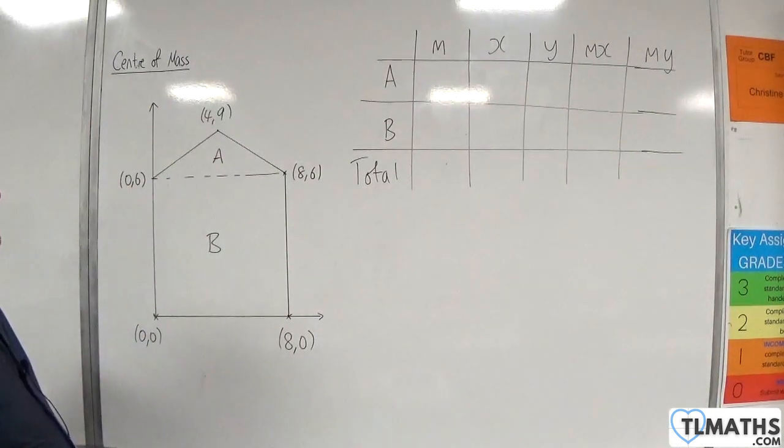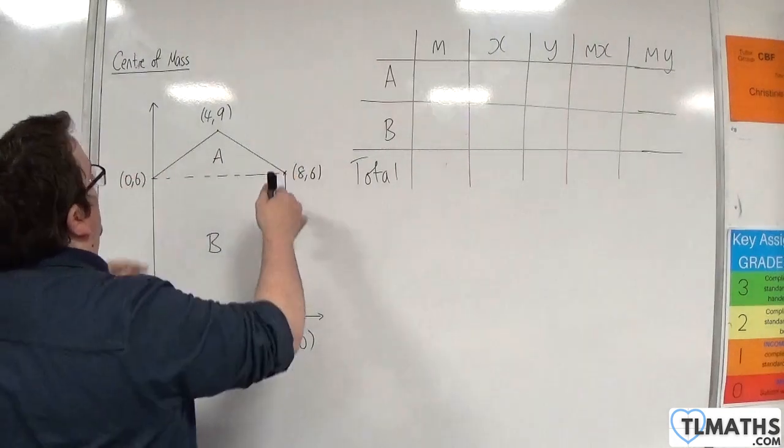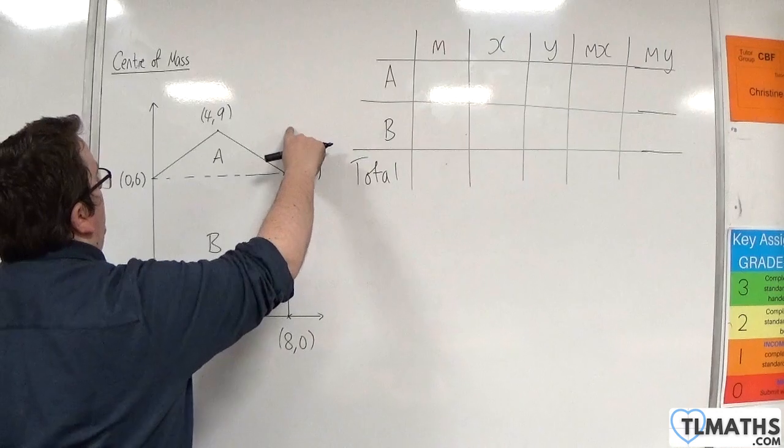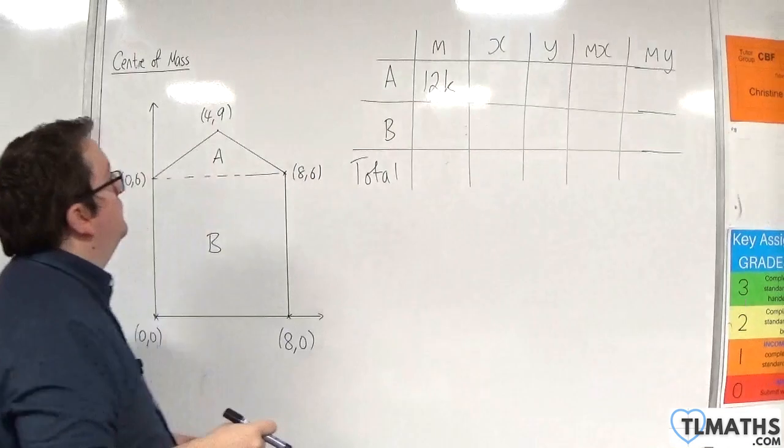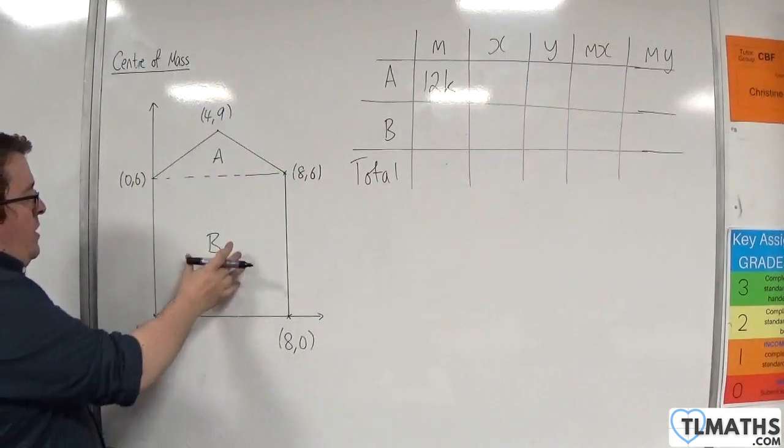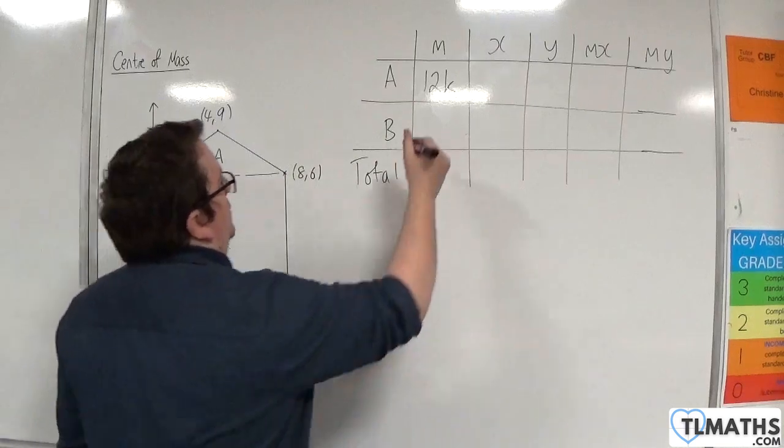First of all, the mass of the triangle. So, I need the area of the triangle, so half base times height. So, we've got 8 times by 3, so 8, 16, 24, half that is 12. So, this will be 12k. The area of B is 8 times 6, so 48, so that's 48k.